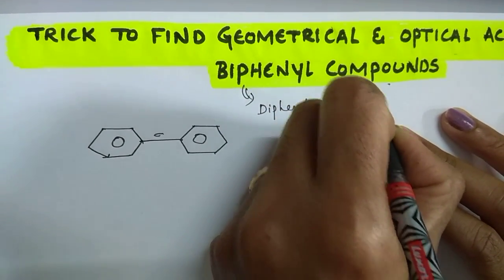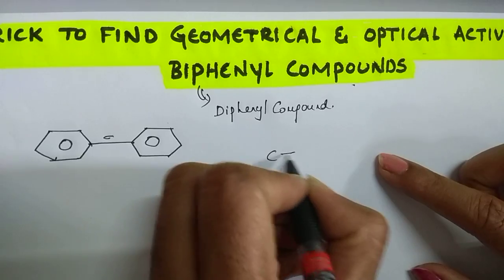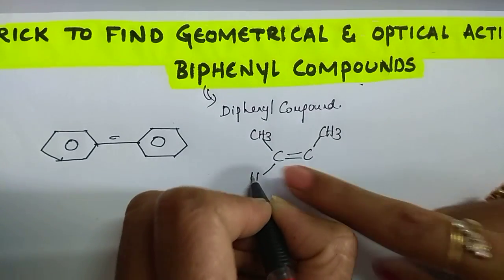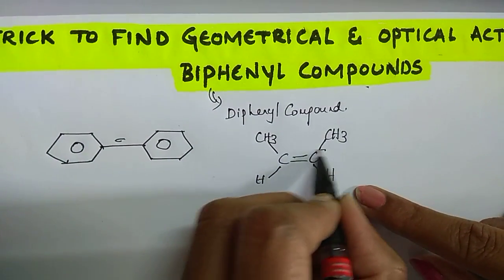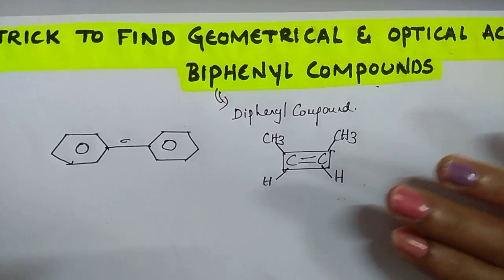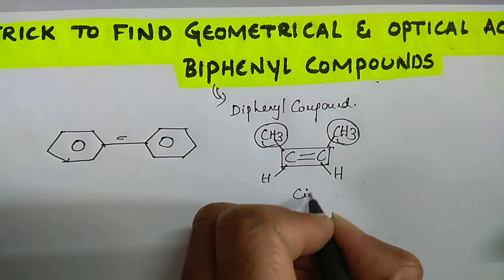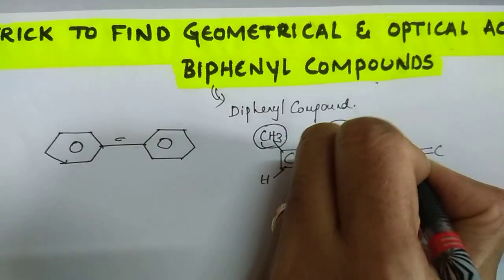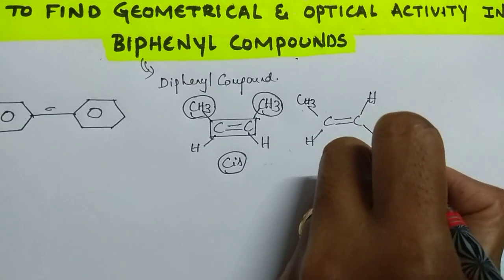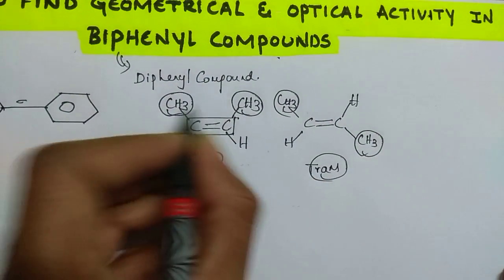You know about geometrical isomerism in butene. Let me recollect that. In case of butene, this is an SP2 carbon and between the two SP2 carbons one pi bond is there. Due to restricted rotation, GI is possible here. If both CH3 groups are on the same side, then it is cis, and if both are on the opposite side, then it is trans.